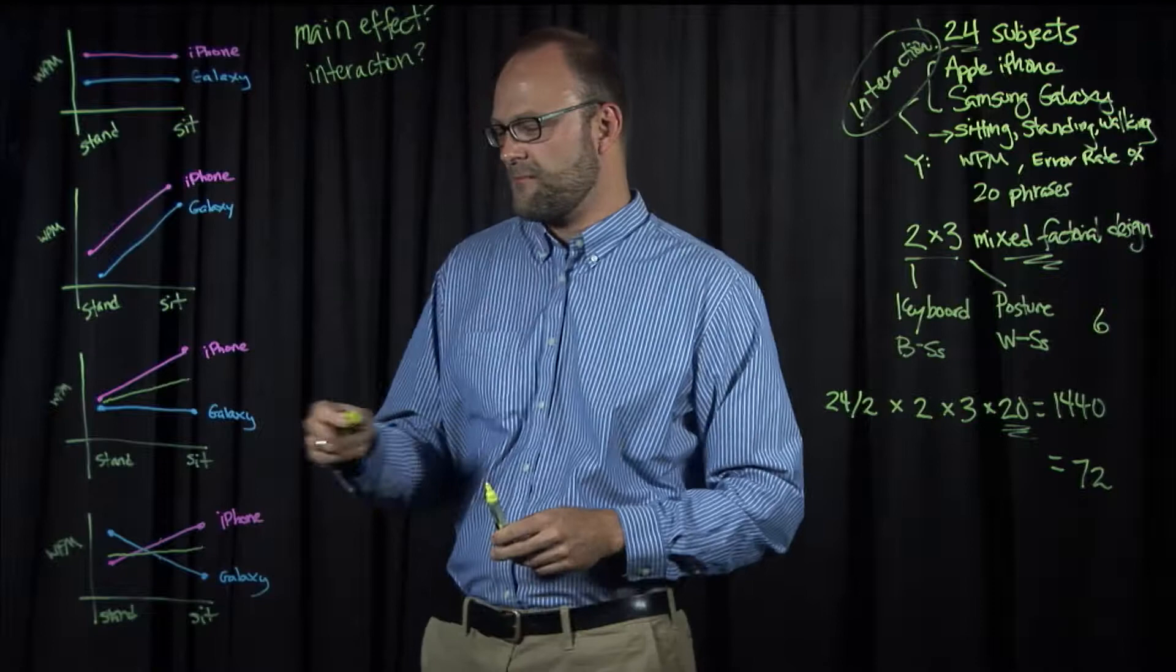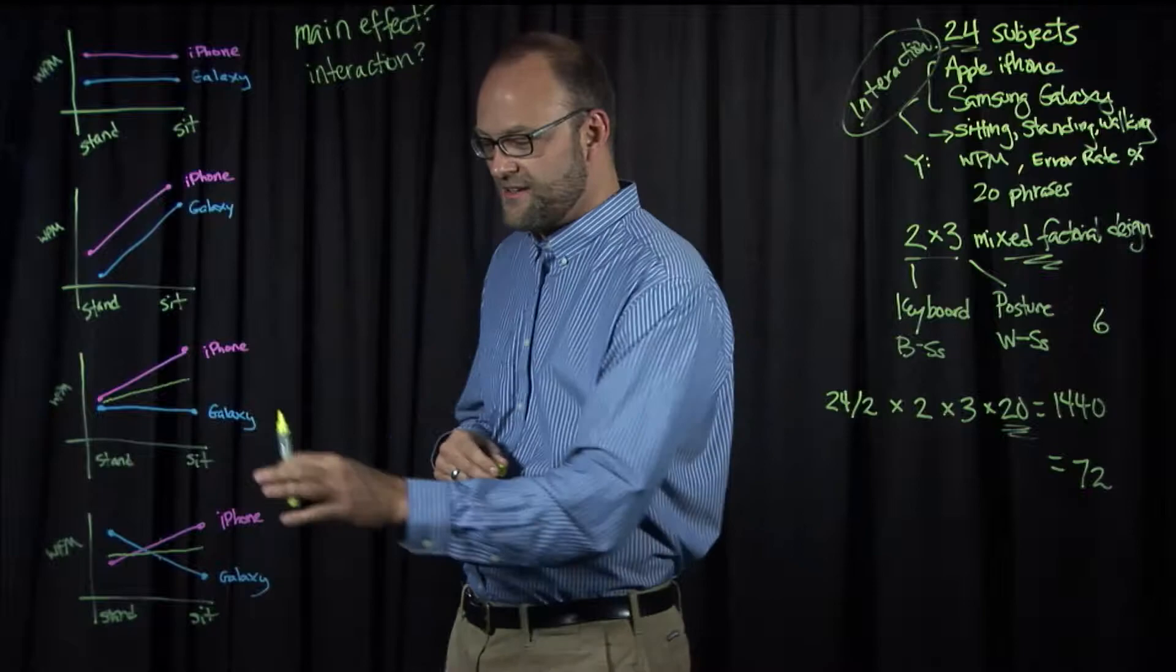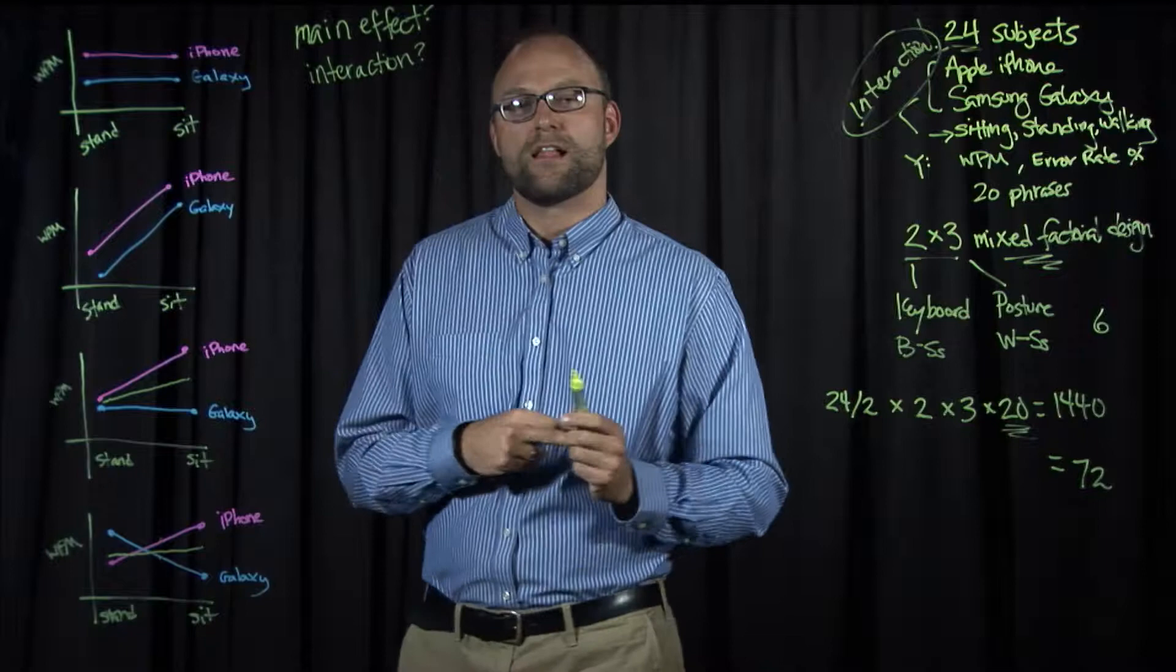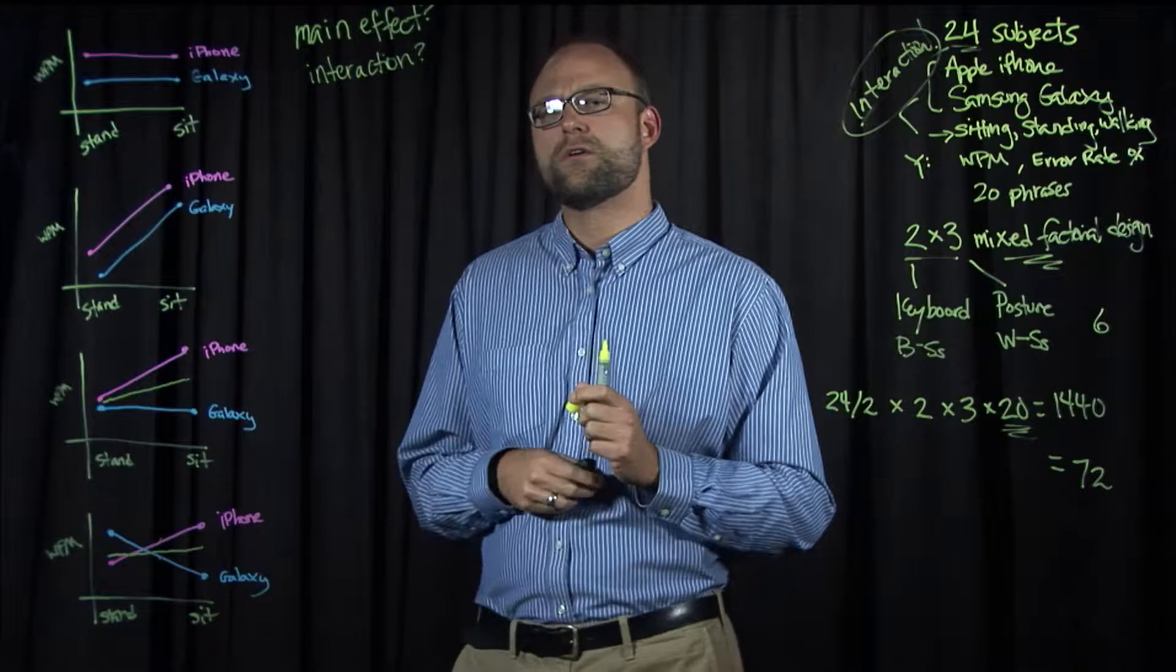And then is there an interaction? Clearly there is. Because, amazingly, when you're standing up, you're much faster with the Galaxy keyboard than the iPhone keyboard. But as soon as you sit down, voila, you are faster with the iPhone keyboard than the Galaxy keyboard. Any time you see the lines crossing, that's a classic picture of an interaction effect.